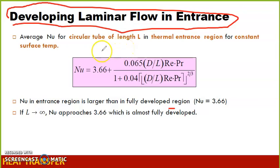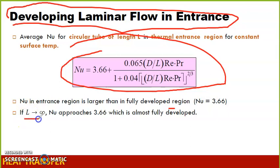For developing laminar flow, the assumption for using this equation is that L must be large such that Nu approaches 3.66, which means that the flow is fully developed, meaning the flow is already laminar when L is large.